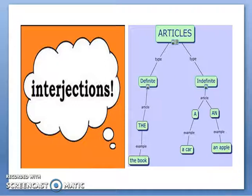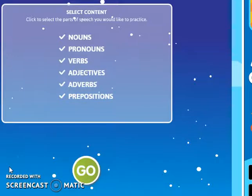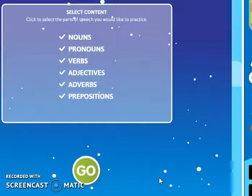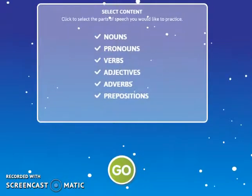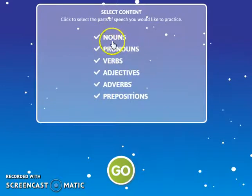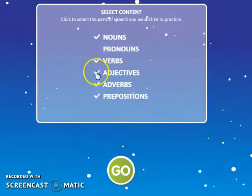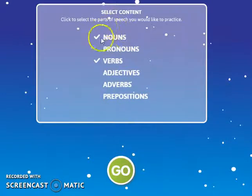Let's have some practice now. There are many online games you can use to practice your parts of speech. Look at this game — there are some options for what you want to play. I'll show you how to play. You can choose whatever part of speech you want to practice. For example, right now I want only nouns and verbs, so let's start with only noun and verb.